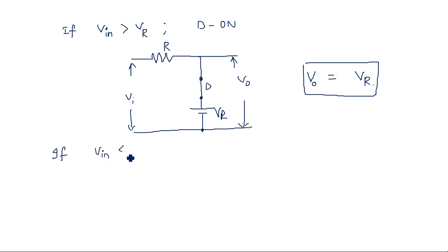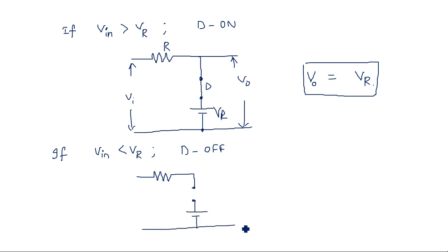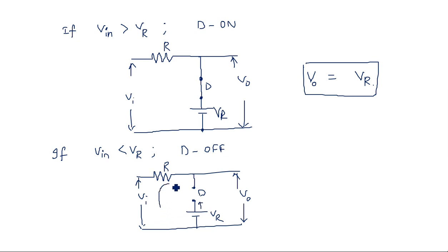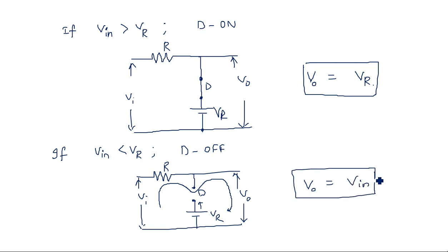When Vin is less than Vr, the anode voltage is less than the cathode voltage, so the diode is in OFF state — it is open circuited. With the diode open circuited, Vr is also effectively removed from the circuit. The input current simply flows through the resistor to the output, so Vout equals Vin. In this condition, the output voltage equals the input voltage.